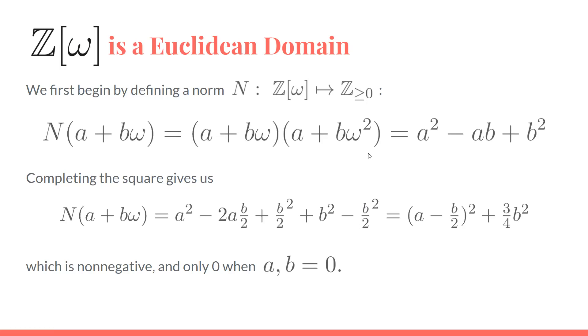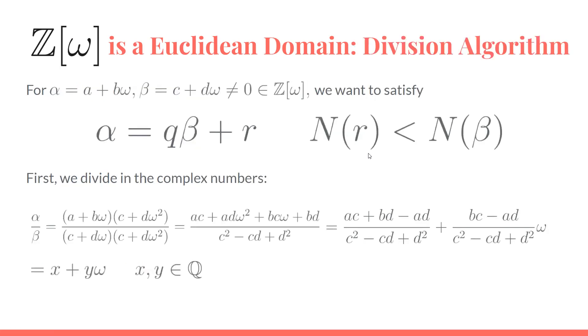Now we want to do a division algorithm. With α and non-zero β, we want to satisfy α = qβ + r, where the norm of r is less than the norm of β. The first thing we're going to do is naively divide in the complex numbers. We'll multiply by the conjugate to make things pretty.